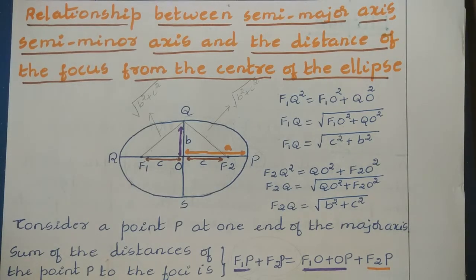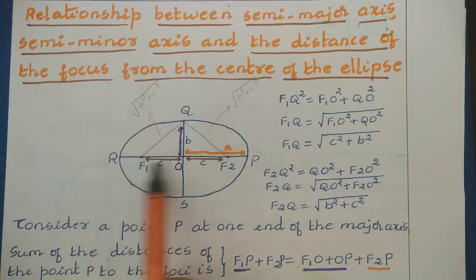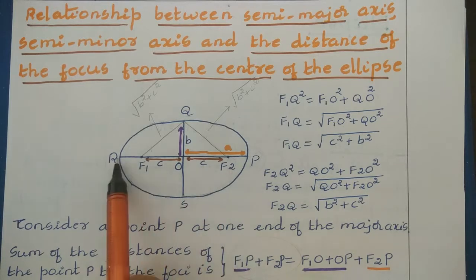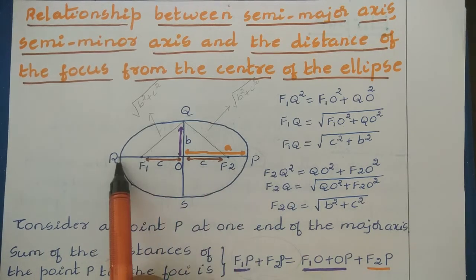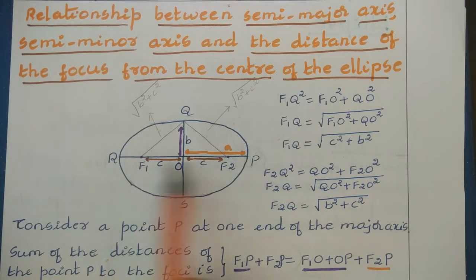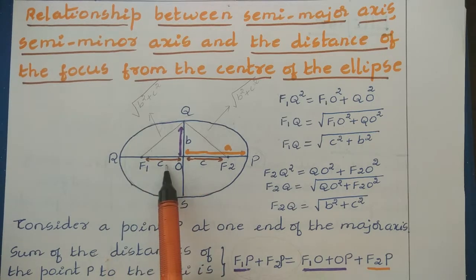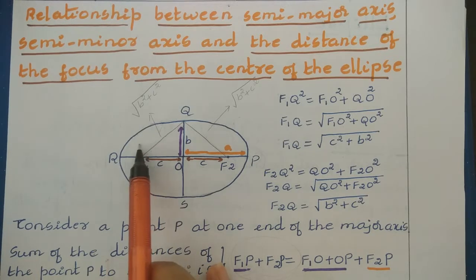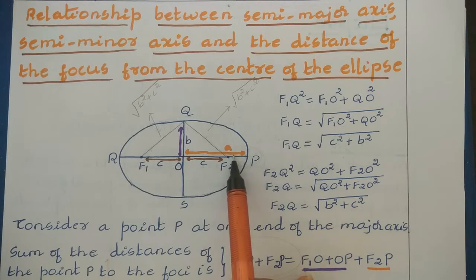Whenever we consider an ellipse, it is associated with many parameters. I have taken one ellipse here. The line segment which passes through the foci of the ellipse is known as the major axis. The length of the major axis is 2a. If I consider one part of the major axis, we call that the semi-major axis, and its length is a. Similarly, the length of the other semi-major axis is also a.